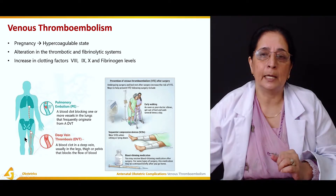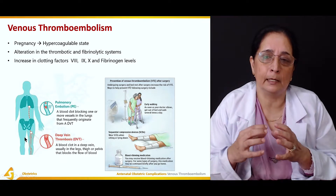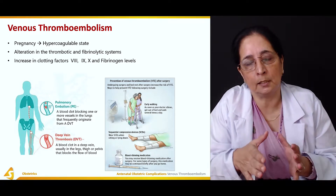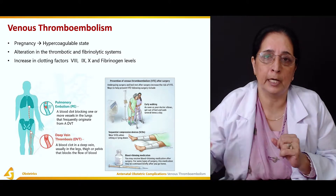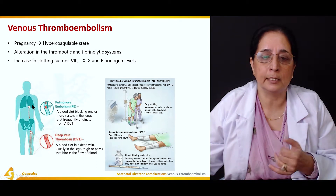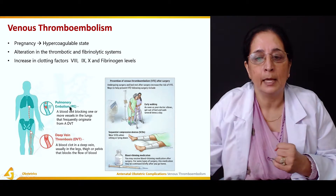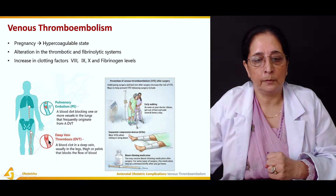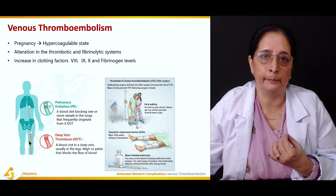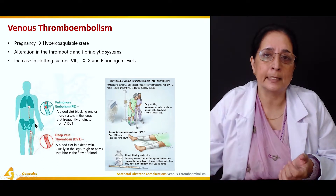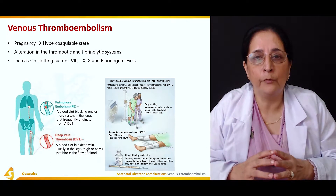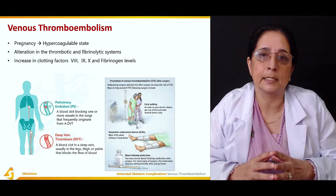Sometimes a small piece dislodges from this large clot and flows in the circulation, causing obstruction in different parts of the body. If it goes to the lungs, it is known as a pulmonary embolus. A dislodged or moving piece of blood clot is known as an embolus.